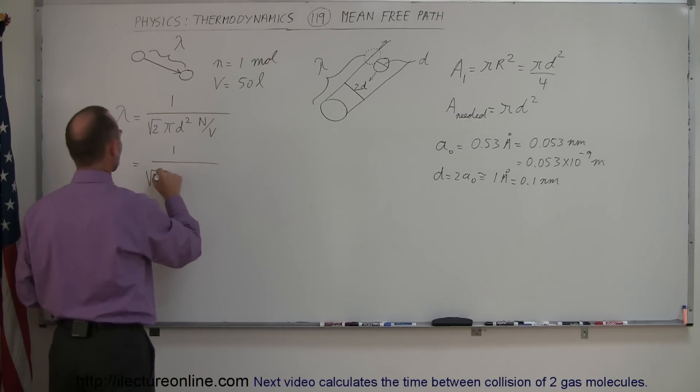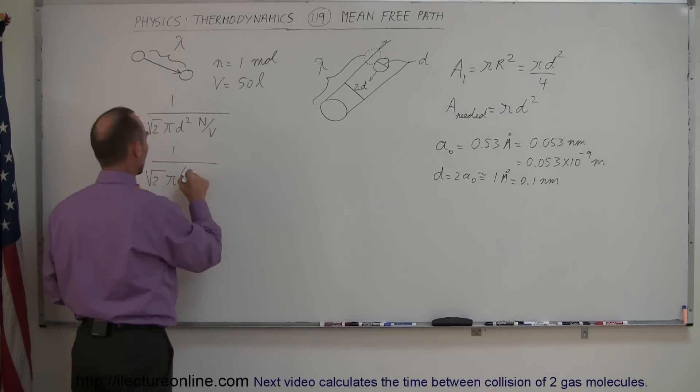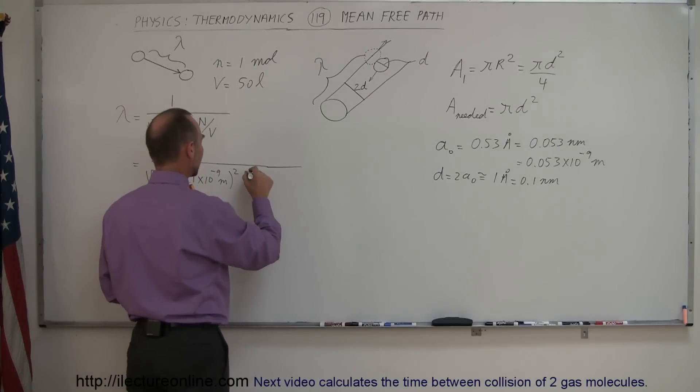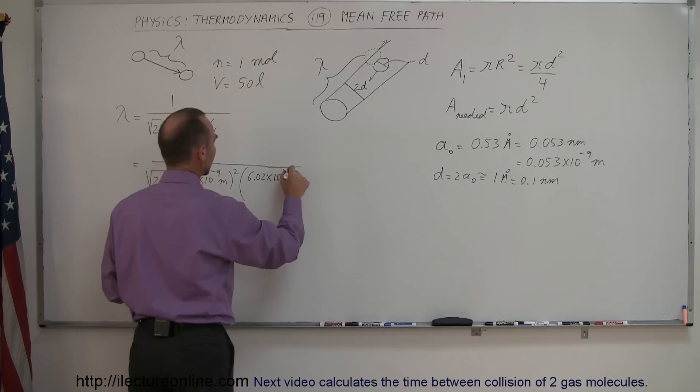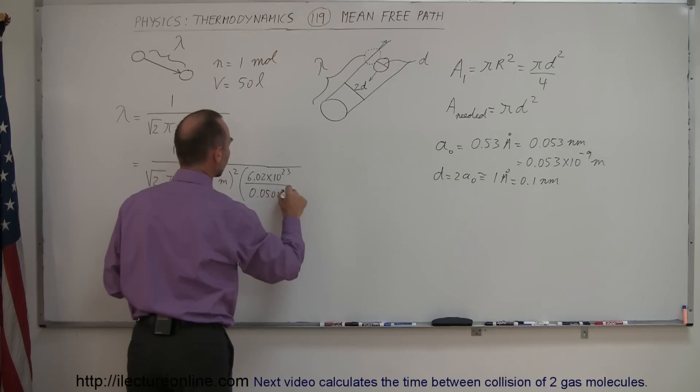1 over the square root of 2 times π times the diameter squared, which is 0.1 times 10 to the minus 9 meters. We square that times the number of molecules, which is Avogadro's number. So it would be 6.02 times 10 to the 23rd, and we divide it by the volume. We set 50 liters, which is 0.050 meters cubed.